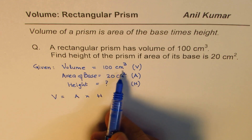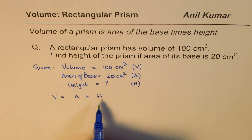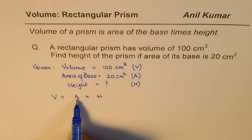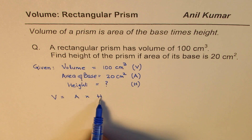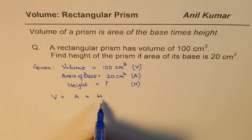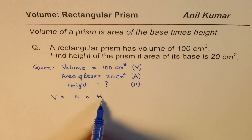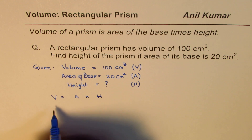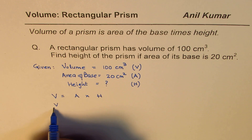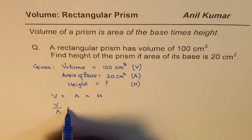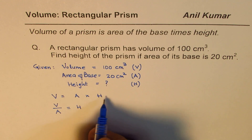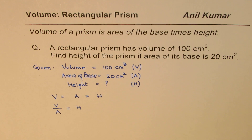We can substitute the values and find height. We know two of these values and we do not know height. Or we can rearrange the formula. If we divide both sides by A, we get volume divided by area equals height. So we can rearrange this formula to find height.